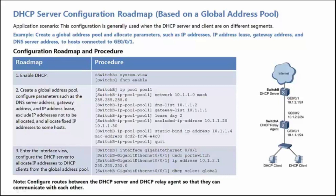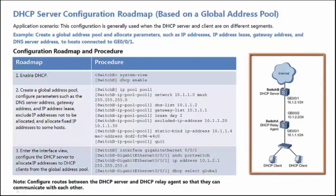Therefore, it is usually used when the DHCP Server and the DHCP Clients are on different network segments. As shown in the figure, there is a DHCP Relay Agent between the DHCP Server and DHCP Clients.